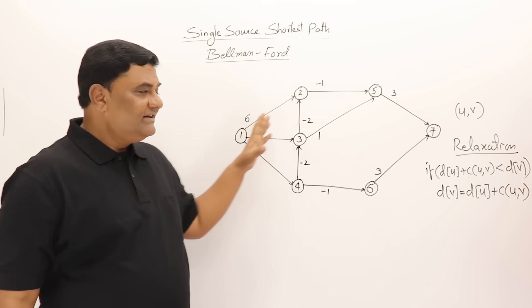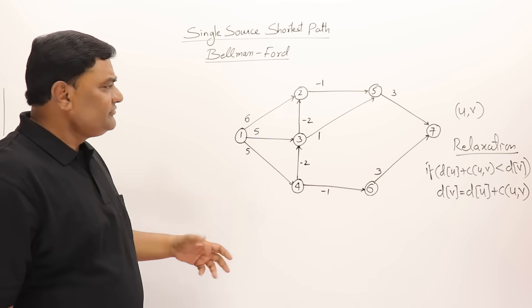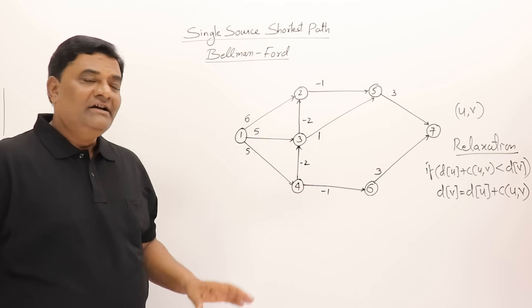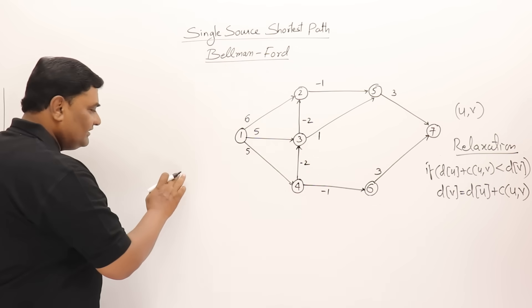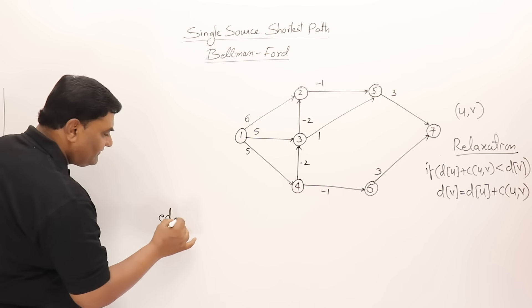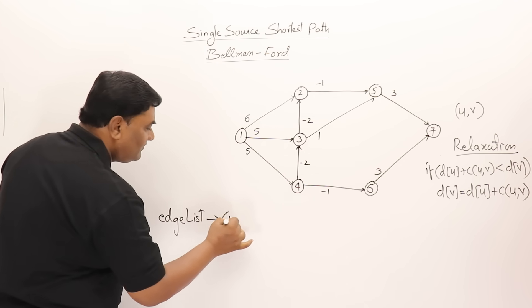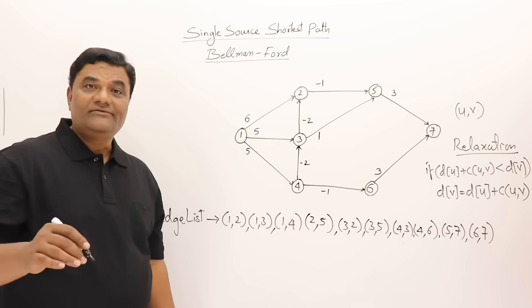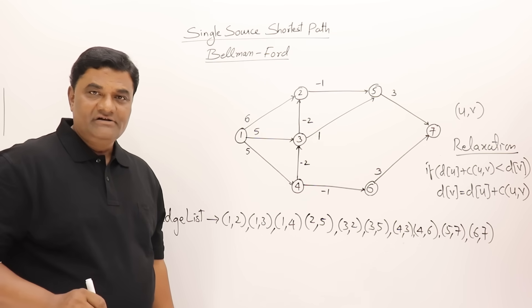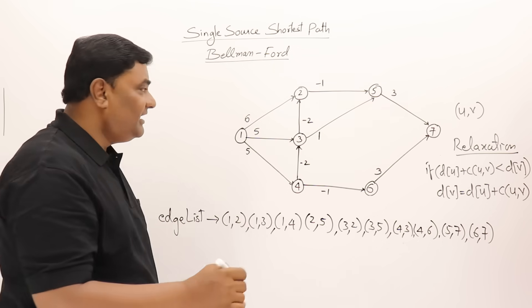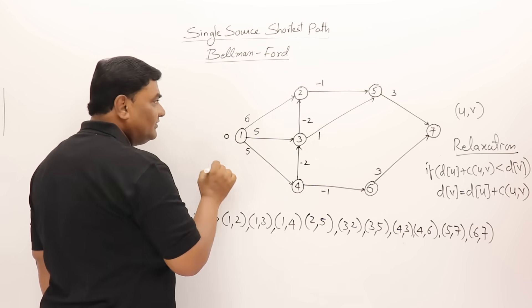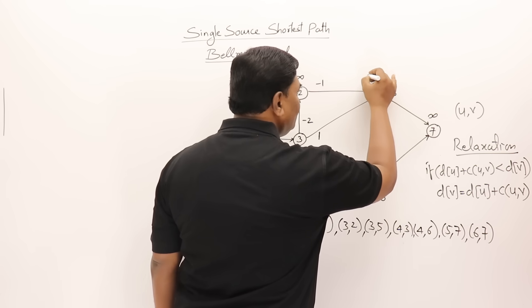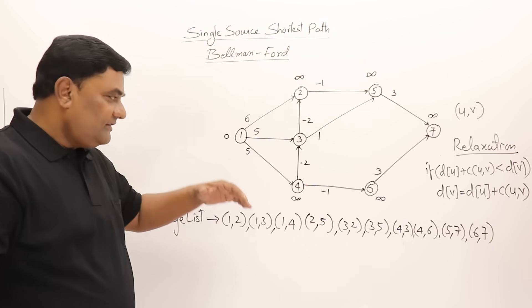The algorithm says: prepare a list of all edges. Which edge you select first doesn't matter — you can select any, but make sure all edges are included. I'll select them vertex by vertex. There are 10 edges total and I have taken all 10 here. Now I have to relax all these edges six times. Initially, mark the source vertex distance as zero and all other vertices as infinity.